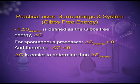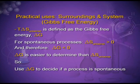Delta G is easier to determine than delta S of the universe, so we use delta G to decide whether the process will be spontaneous or non-spontaneous. For a process to be spontaneous, delta G should be less than zero. If the value of delta G is greater than zero, the process is non-spontaneous. And if the value of delta G equals zero, then the process is at equilibrium.